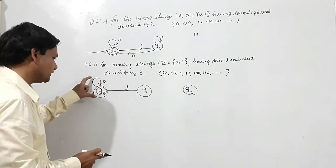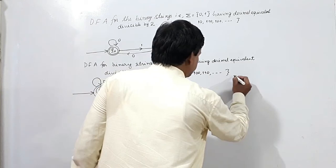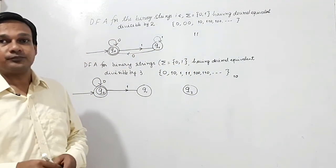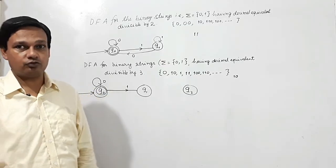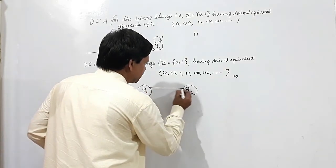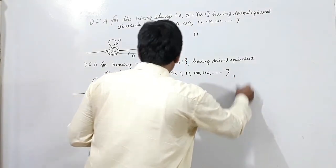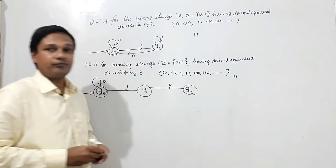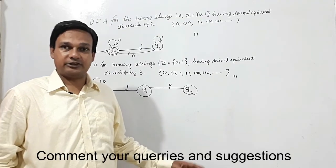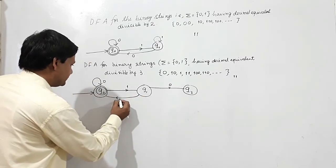I have shown both transitions at 0 and 1 from Q0. Now at Q1: for input 0, the string '10' has decimal equivalent 2. Dividing 2 by 3 gives remainder 2, so the transition goes from Q1 to Q2. For input 1 at Q1: the string '11' has decimal equivalent 3. Dividing 3 by 3 gives remainder 0, so the transition goes from Q1 to Q0.